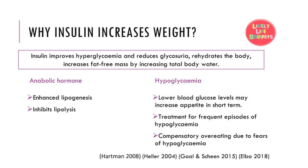Why does insulin increase weight? This is because insulin improves hyperglycemia and reduces glycosuria, rehydrates the body, and increases fat-free mass by increasing total body water. Furthermore, insulin is an anabolic hormone that enhances lipogenesis and inhibits lipolysis. Insulin reduces blood glucose levels, which improves appetite in the short term, and greater food intake increases weight. Another possibility is insulin causing frequent episodes of hypoglycemia, where repeated treatment increases blood sugar levels and subsequently weight. Another case may be that patients do not experience hypoglycemia but indulge in compensatory overeating due to excess fear of hypoglycemia.